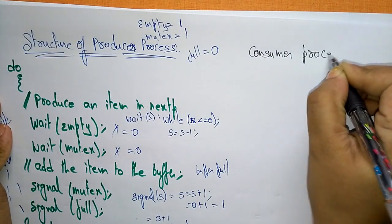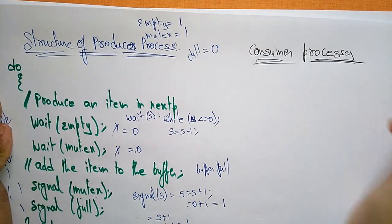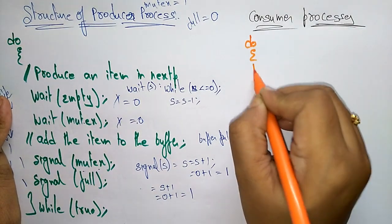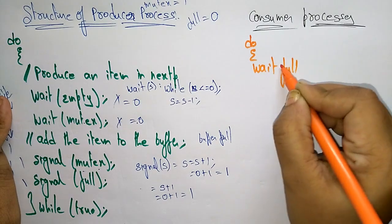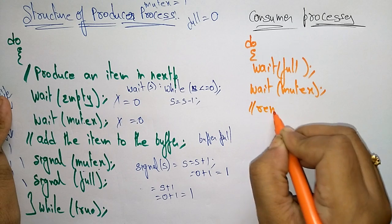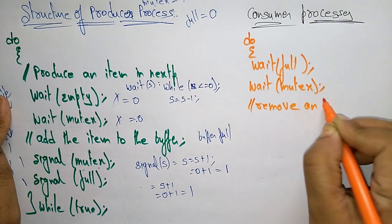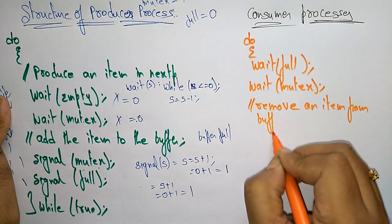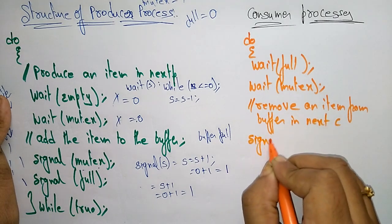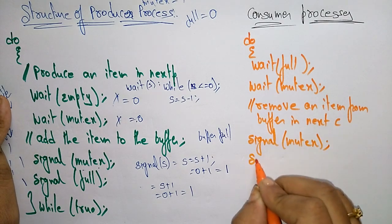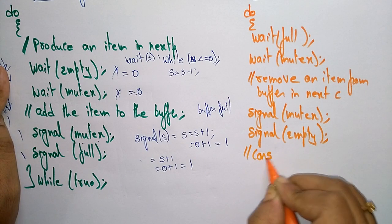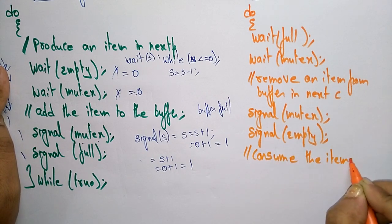Now let us see the structure of the consumer process — how the consumer will consume the items that the producer produced. In the consumer process: wait(full), then wait(mutex), then remove an item from the buffer (this is the critical section). After that, call signal(mutex) and signal(empty), then consume the item.